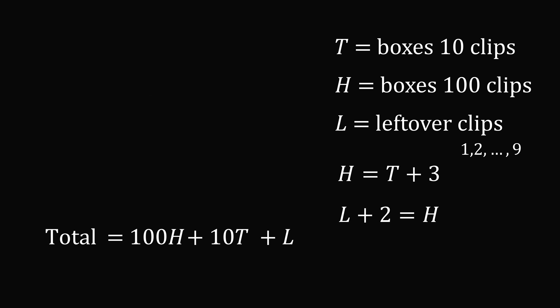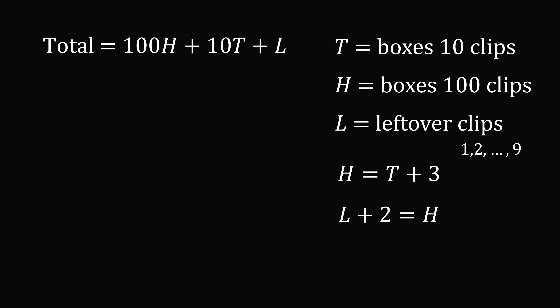This should exactly remind you of a three-digit number, where we have a hundreds column, a tens column, and a ones column. In this problem they didn't say the ones column — they said the number of leftover paper clips. But we can see that the ones column exactly corresponds to the number of leftover clips not contained in the hundreds or tens boxes, which is the same as not being in the hundreds or tens column.